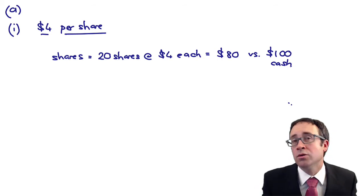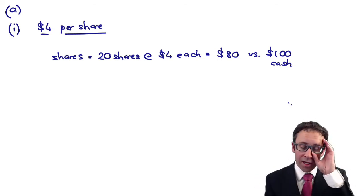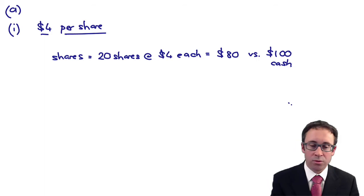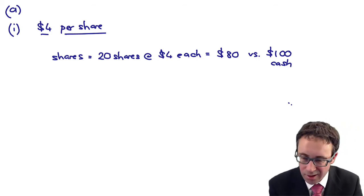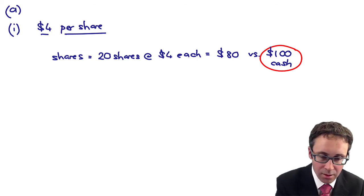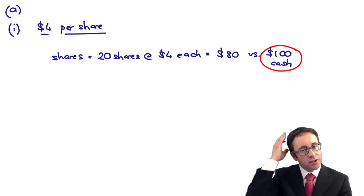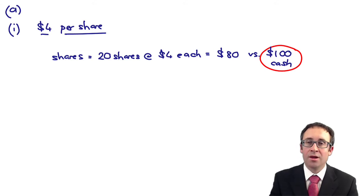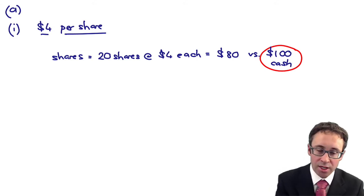Versus the $100 which is there for your cash. Simple decision. What would the debenture holders do? Would they take the shares or would they take the cash? Which one's worth more? You'd take the cash, wouldn't you? It's worth a lot more. So if the share price got to $4 per share, you would take the cash. You would not take the shares.